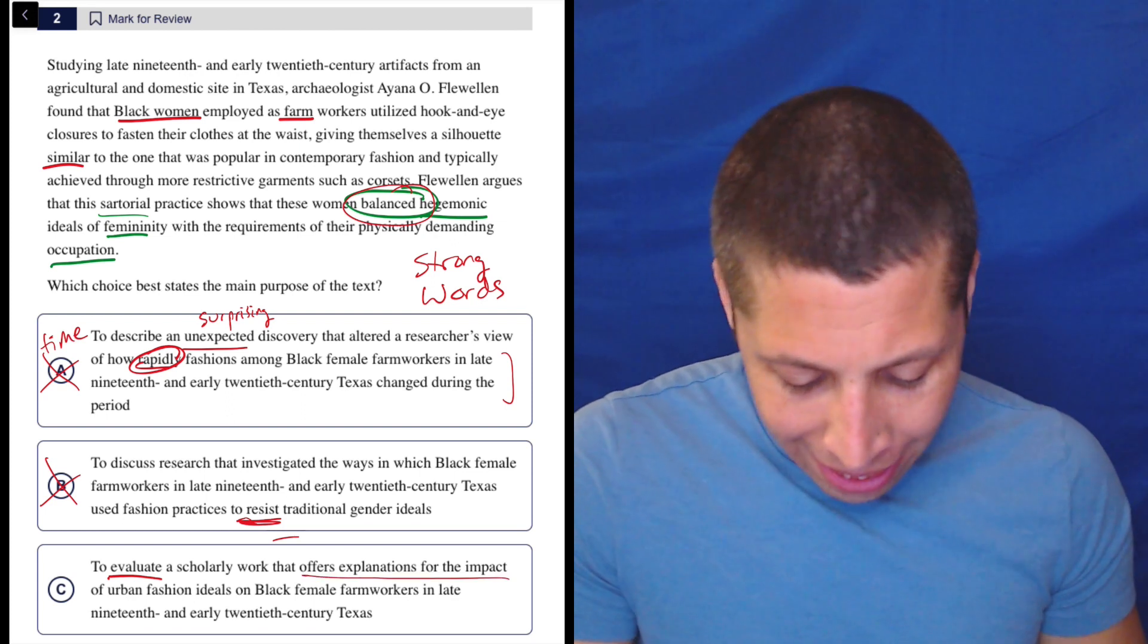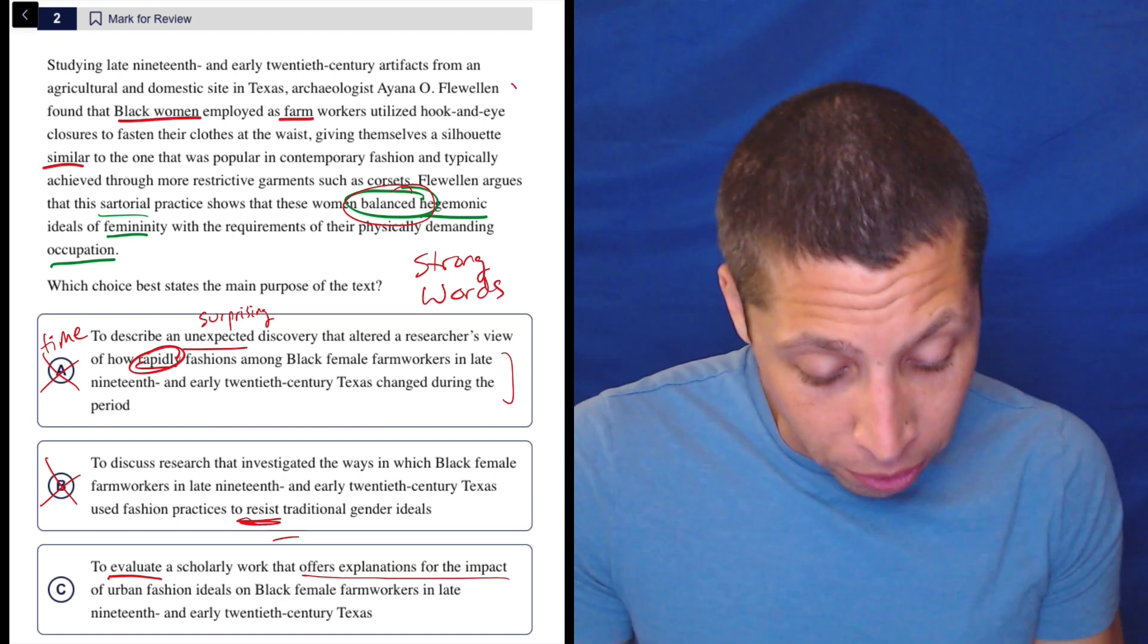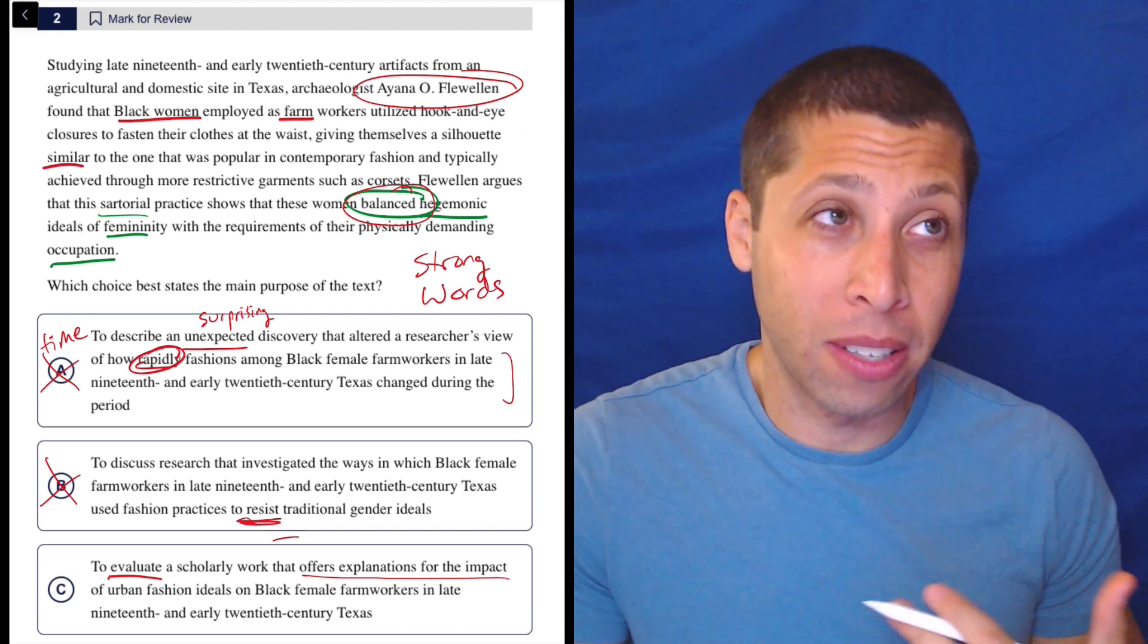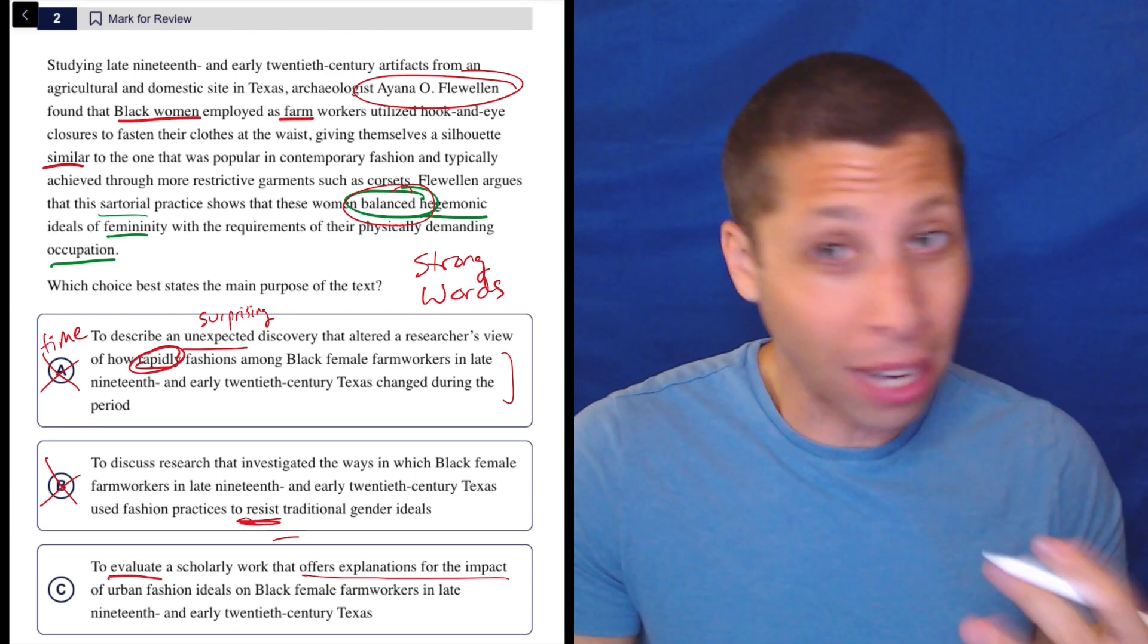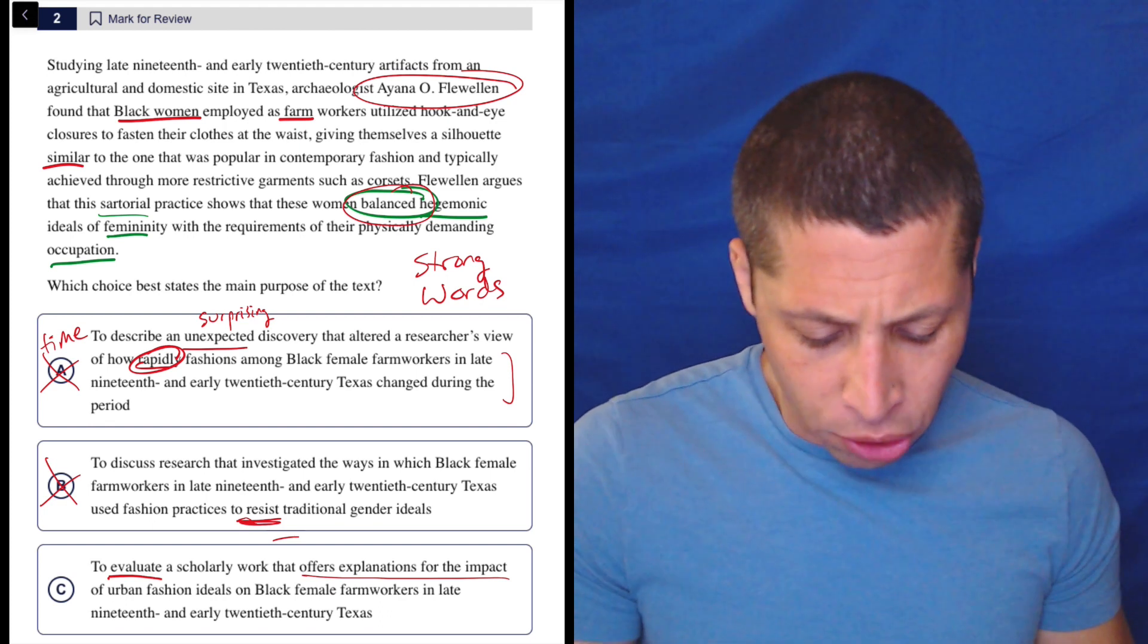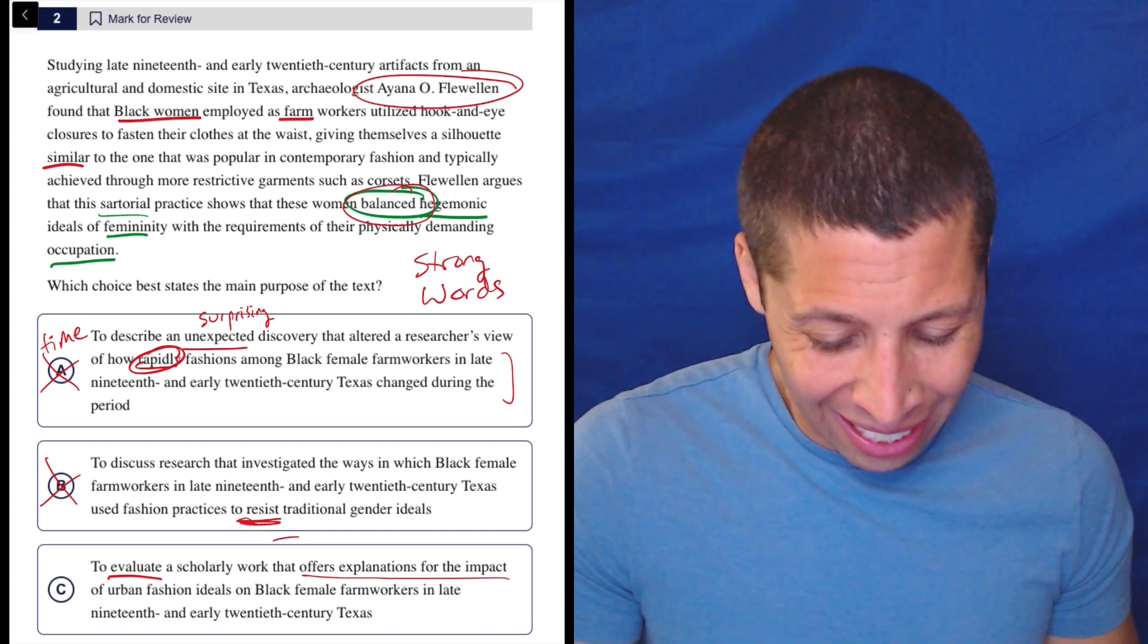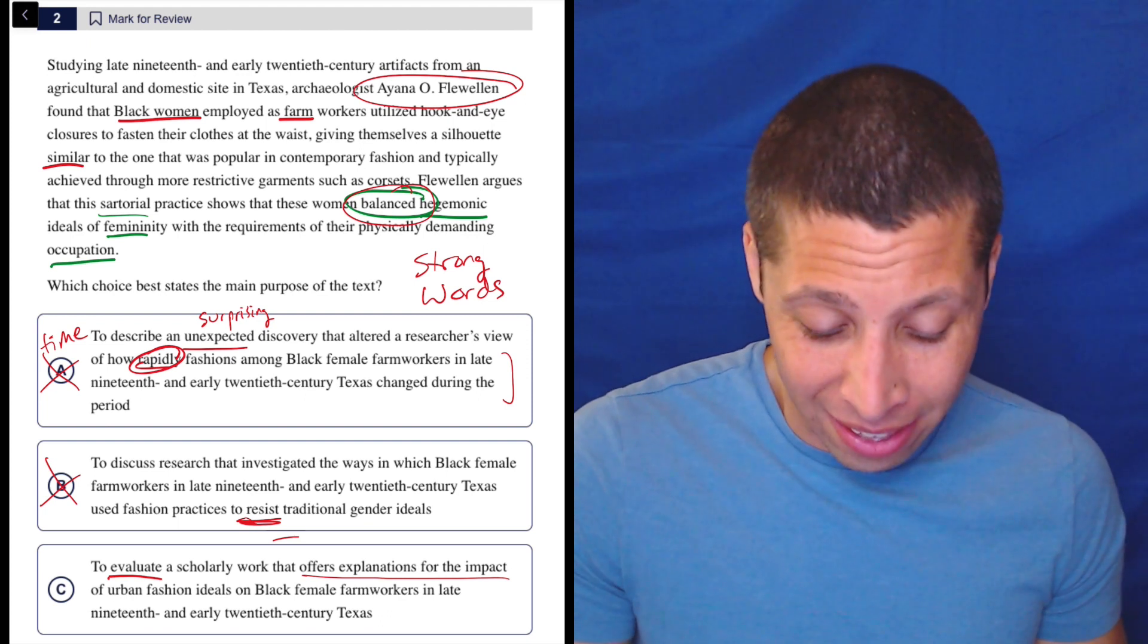Maybe it's evaluating it. It doesn't seem to be saying whether Ayanna is good or bad. So I don't know. An evaluation to me seems like we would say, oh, the research that she did was good. The research that she did was wrong, but I don't think we're getting that. It just seems like a statement of fact. And does her work offer explanations for the impact? Well, I don't even know what that means. Does it talk about the impact? I don't know. It just says that they balance things, I guess. I don't know if that's an impact. Is it explaining what they're doing?